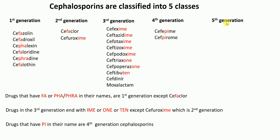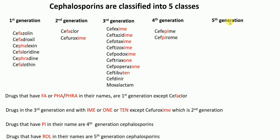Finally, the fifth generation cephalosporin — drugs that have ROL in their names are fifth generation cephalosporins. So if you see any drug which has ROL in its name, that cephalosporin is a fifth generation cephalosporin. The drugs are Ceftobiprole (ROL) and Ceftaroline (ROL). They are fifth generation cephalosporins.